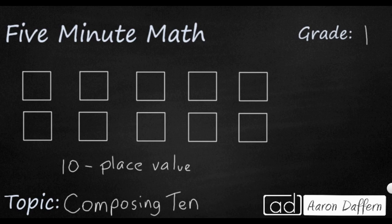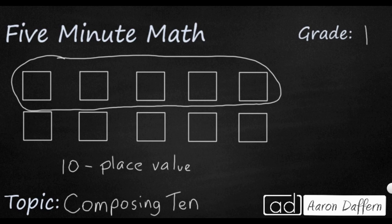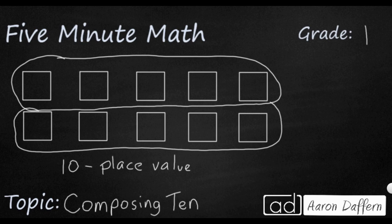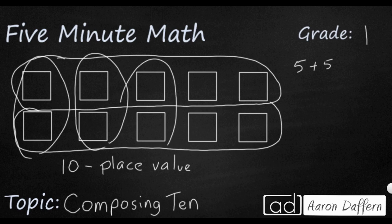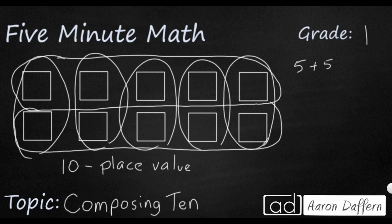We've got 10 here, and we just want to look at different ways that we can make 10. I want to use the picture here so we can visually see that. I could draw these two big, long ovals, and I can make 10 with 5 and 5. Another way to make 10 is instead of going side to side, what if we go up and down? We've got these sets of 2s here — five sets of 2s. So 2 plus 2 plus 2 plus 2 plus 2. When we skip count by 2s, we say 2, 4, 6, 8, 10.